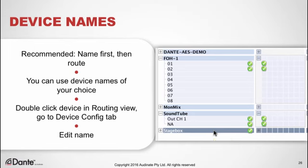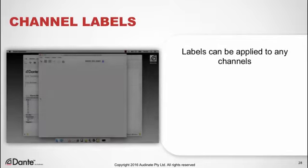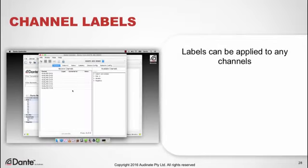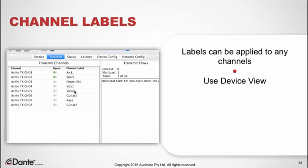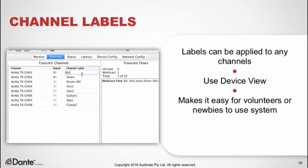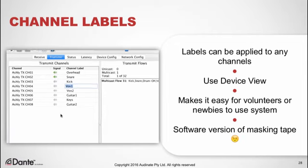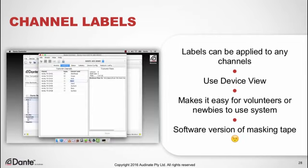The name is immediately reflected on the device in the routing view. In addition to naming devices, you can use the device view to label individual channels of transmitters or receivers. This is a great tool for quickly identifying individual channels in a live mix and makes it easy for volunteers or newcomers to use the system — think of it as a software version of the masking tape typically found on consoles.